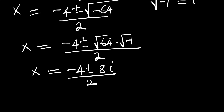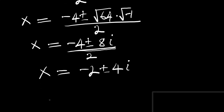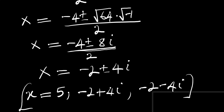We divide all parts by 2, which gives us x equals negative 2 plus or minus 4i. So the solutions for this equation are: x equals 5, x equals negative 2 plus 4i, and x equals negative 2 minus 4i. The only real solution is x equals 5, while the other two are both complex solutions. Thank you and goodbye.